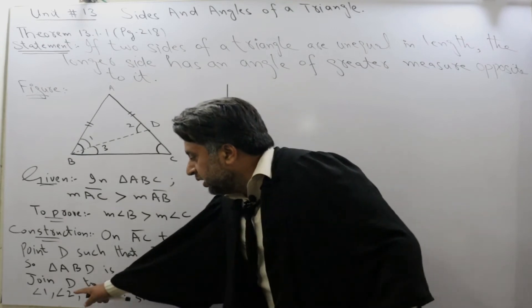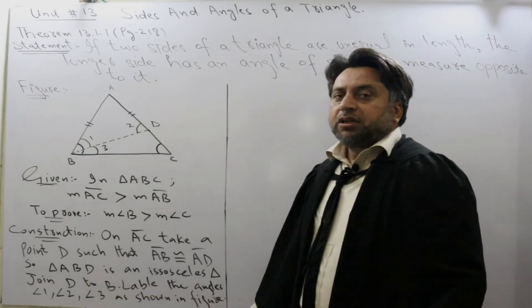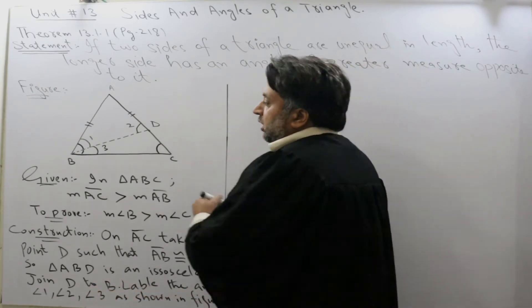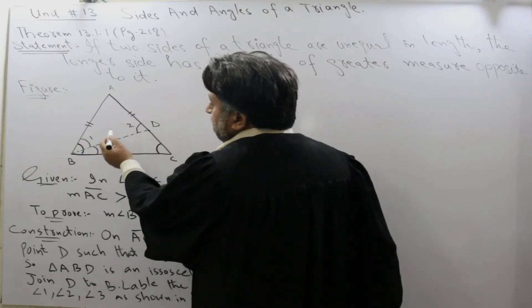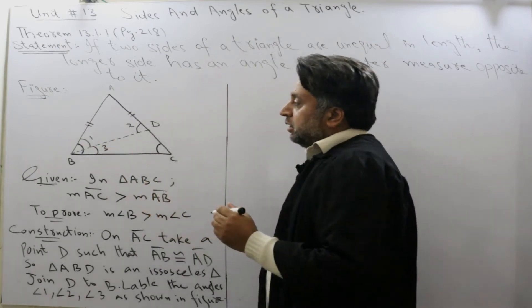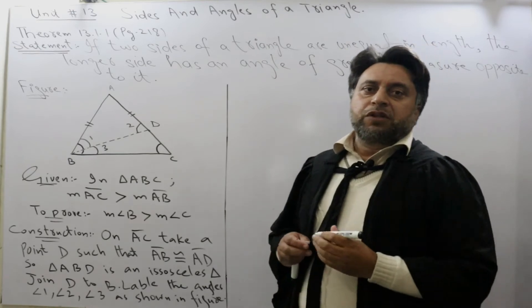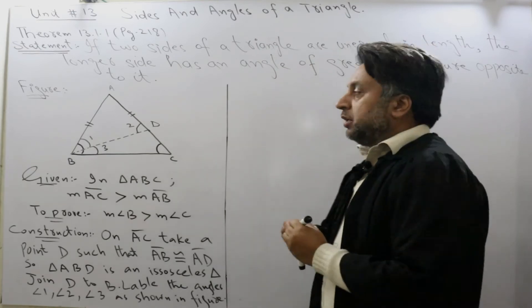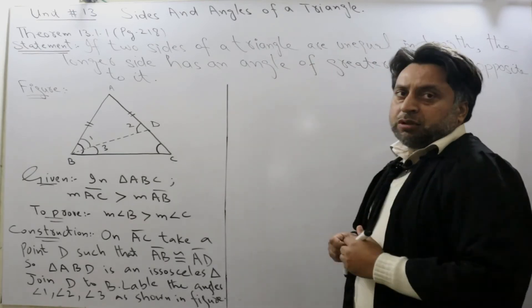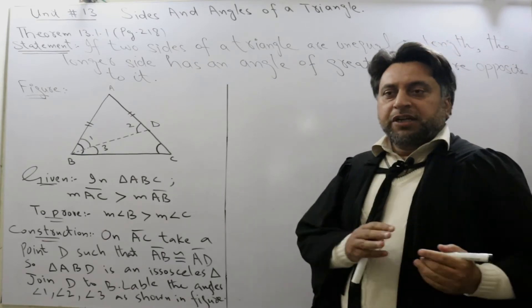Label the angles 1, 2, 3 as shown in the figure. It's angle 1, angle 2, and angle 3. The most important part of the theorem is the proof. In proof we have two things: statements and reasons.